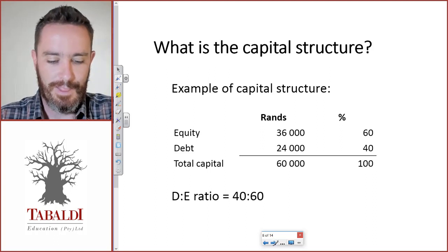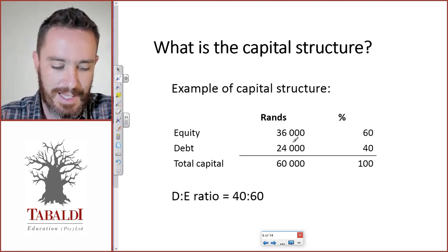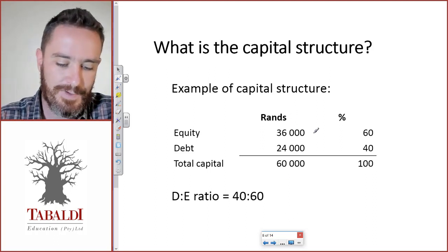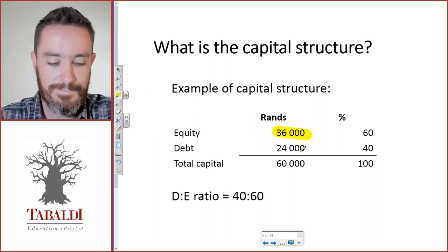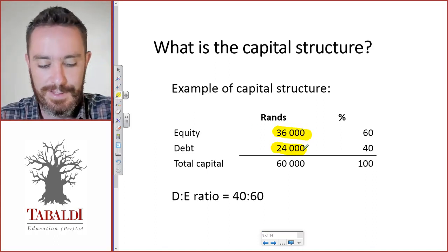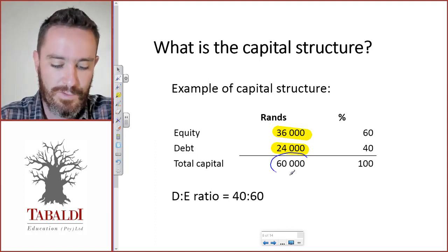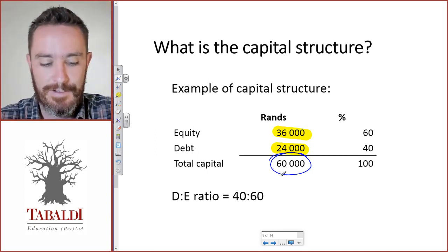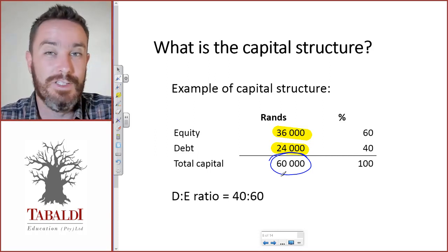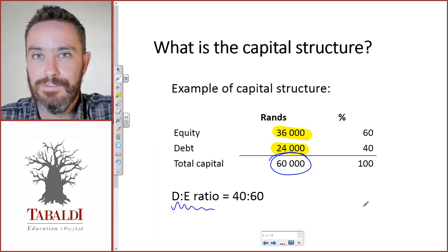Let's look at an example of a capital structure. This company is funded with 36,000 rands worth of equity and 24,000 rands worth of debt. The overall capital — the overall funds available — is 60,000. Now we need to calculate or determine the capital structure, which means we need to calculate the debt-equity ratio.